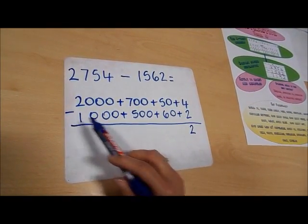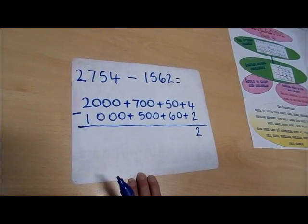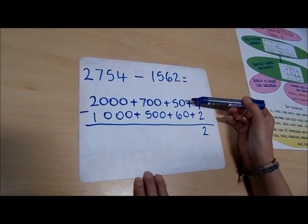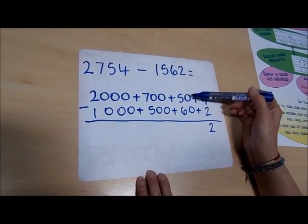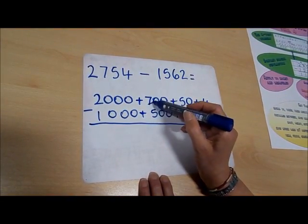50 take away 60. We have to borrow from the next column because we don't have enough to take 60 away from 50. So we're going to borrow 100.